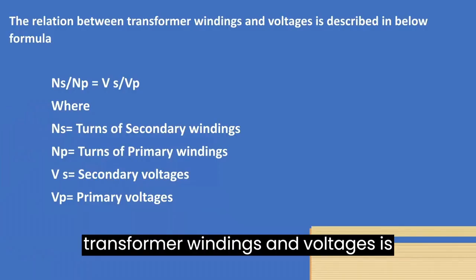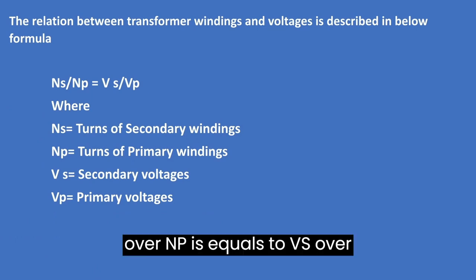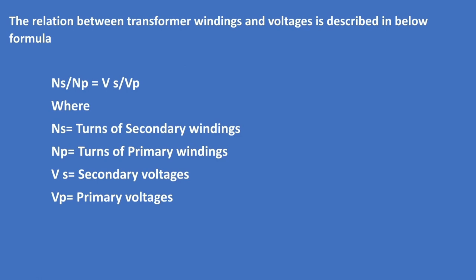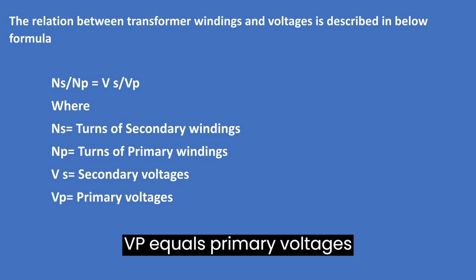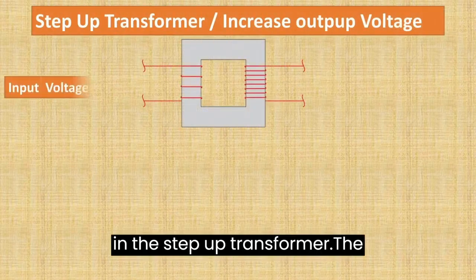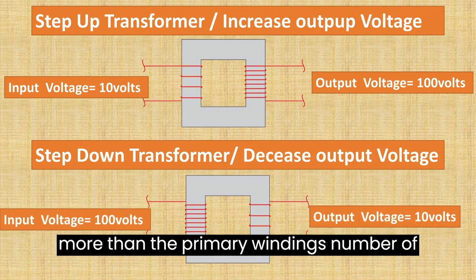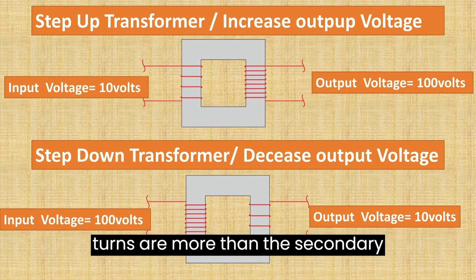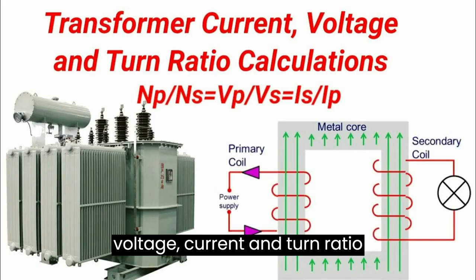The relation between transformer windings and voltages is described by the formula: Ns over Np equals Vs over Vp. Where Ns equals turns of secondary winding, Np equals turns of primary winding, Vs equals secondary voltage, and Vp equals primary voltage. In the step-up transformer, the secondary winding number of turns is more than the primary winding number of turns. But in the step-down transformer, the primary winding number of turns is more than the secondary winding number of turns. If you want to know more about transformer voltage, current, and turns ratio calculation, watch the linked video or visit the Technical Library channel.